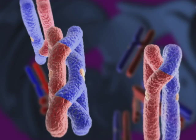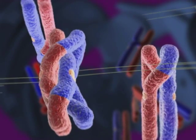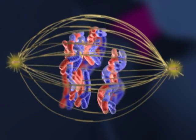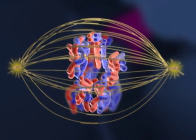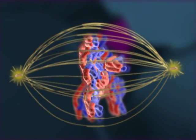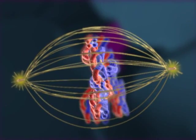After the spindle forms and the nuclear envelope breaks down, microtubules from opposite poles attach to each chromosome of the homologous pair, resulting in a tug-of-war. At metaphase I, the chromosome pairs are positioned in the middle of the cell.